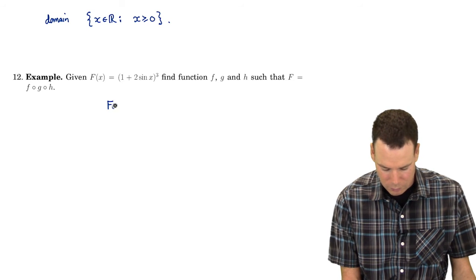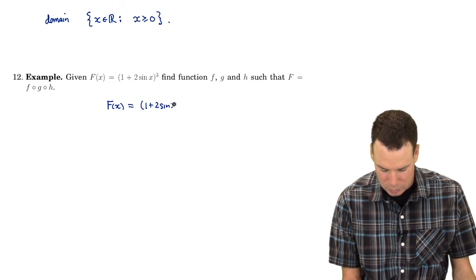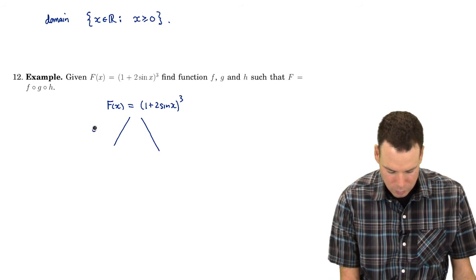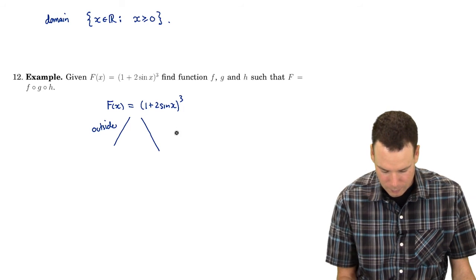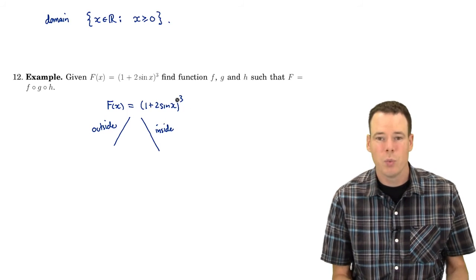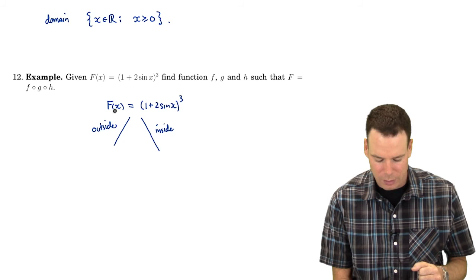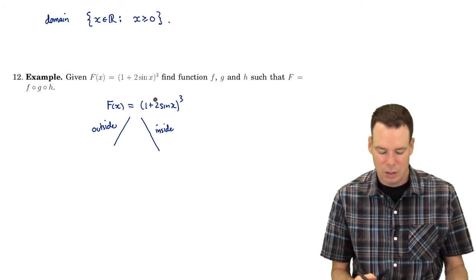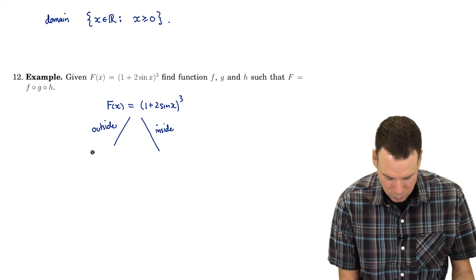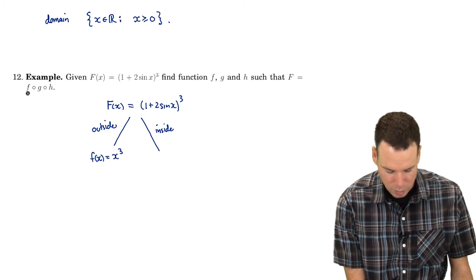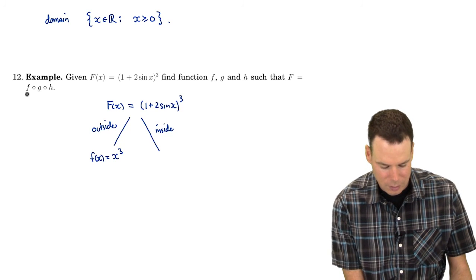We start with our function F of x and see how we can decompose it into three functions. The approach is to strip off an outside function and then see what's left inside, continuing in that way. The outside function is the very last thing we do to evaluate F at x. Thinking through the order of operations: first we take sine, then multiply by 2, then add 1, and the very last thing we do is cube it. So our outside function is the cubing function — it's furthest to the left in the composition.